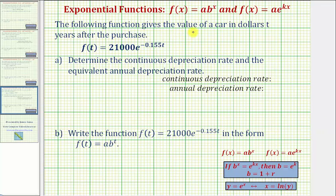The following function gives the value of a car in dollars t years after the purchase. We're given f of t equals 21,000 times e raised to the power of negative 0.155t.